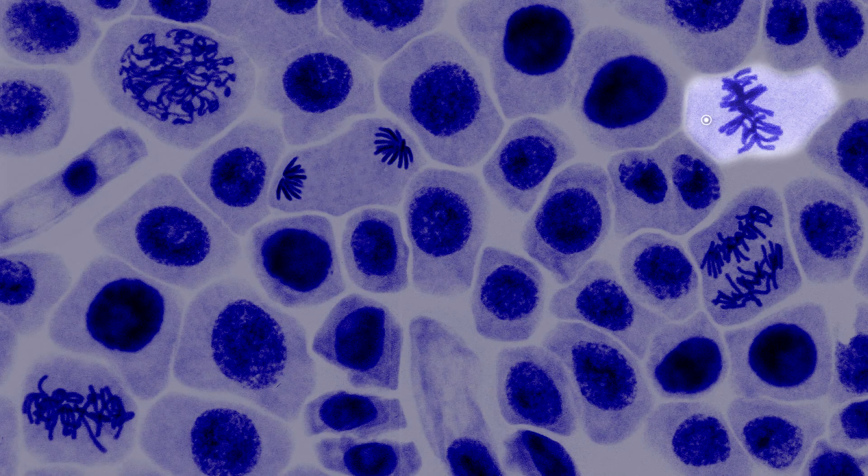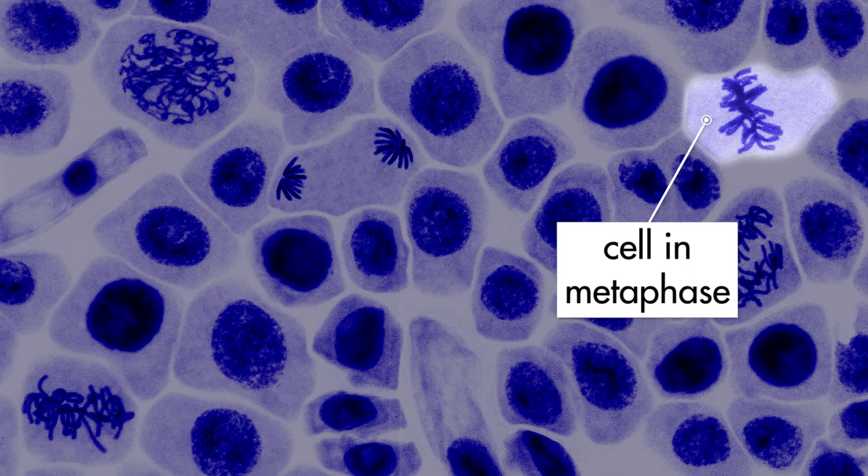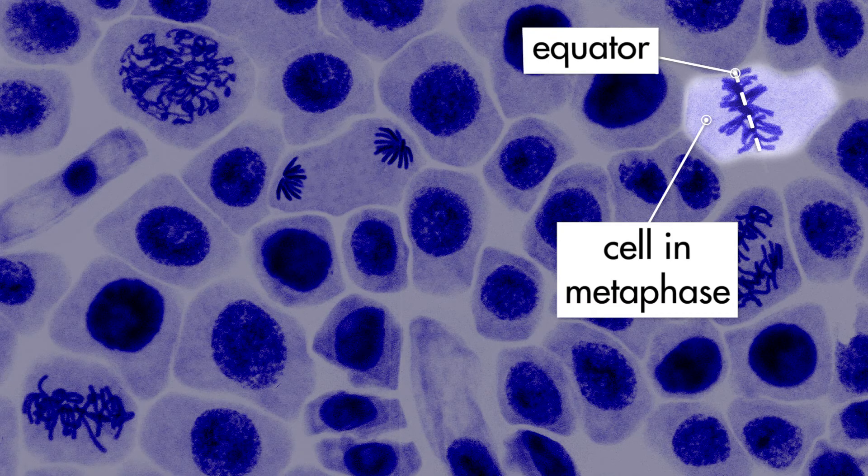The next phase of mitosis is called metaphase. During metaphase, the microtubules cause the replicated chromosomes to line up along the cell's equator.